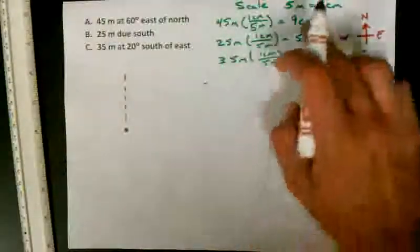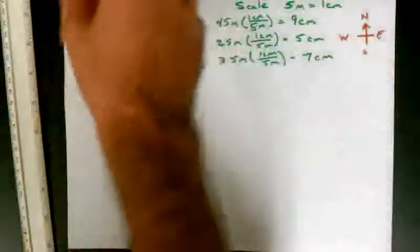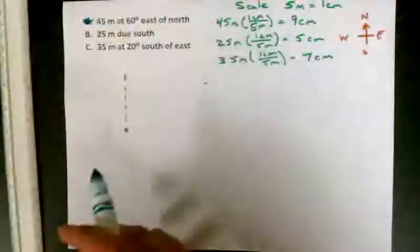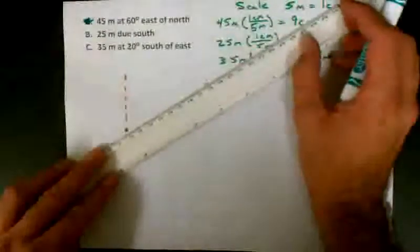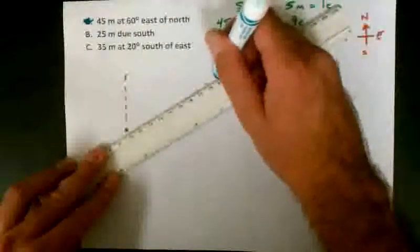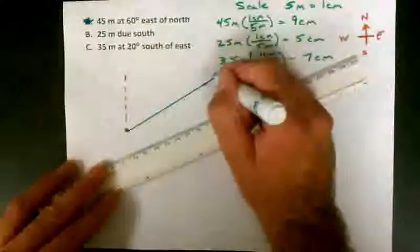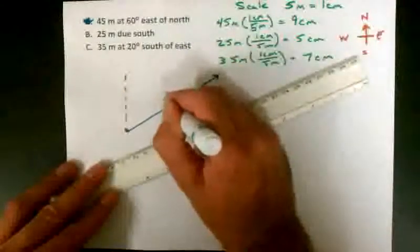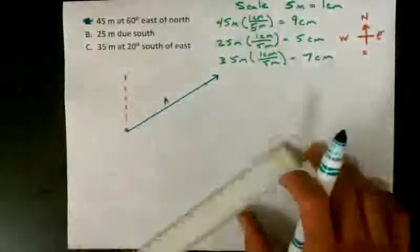Now this vector has to be 9 centimeters long. So we'll do vector A in this teal color and we'll make it 9 centimeters long. I'll label that vector A, and never forget to put the arrowhead on the end of your vector.